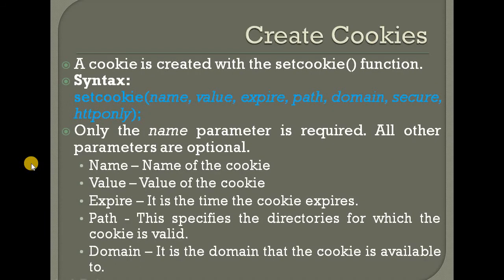How to set a cookie — how to create a cookie? Cookies are created with the setcookie() function. That function will create or set a cookie. The syntax is: setcookie(name, value, expire, path, domain, secure, httponly). When you set a cookie, you use the setcookie() function.